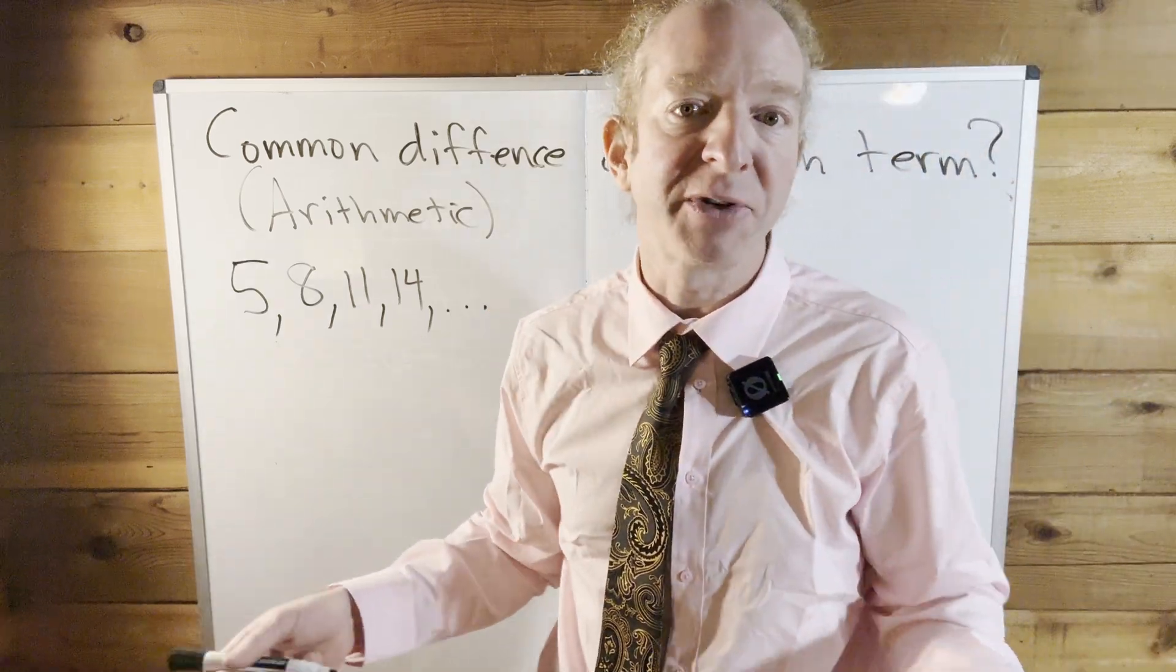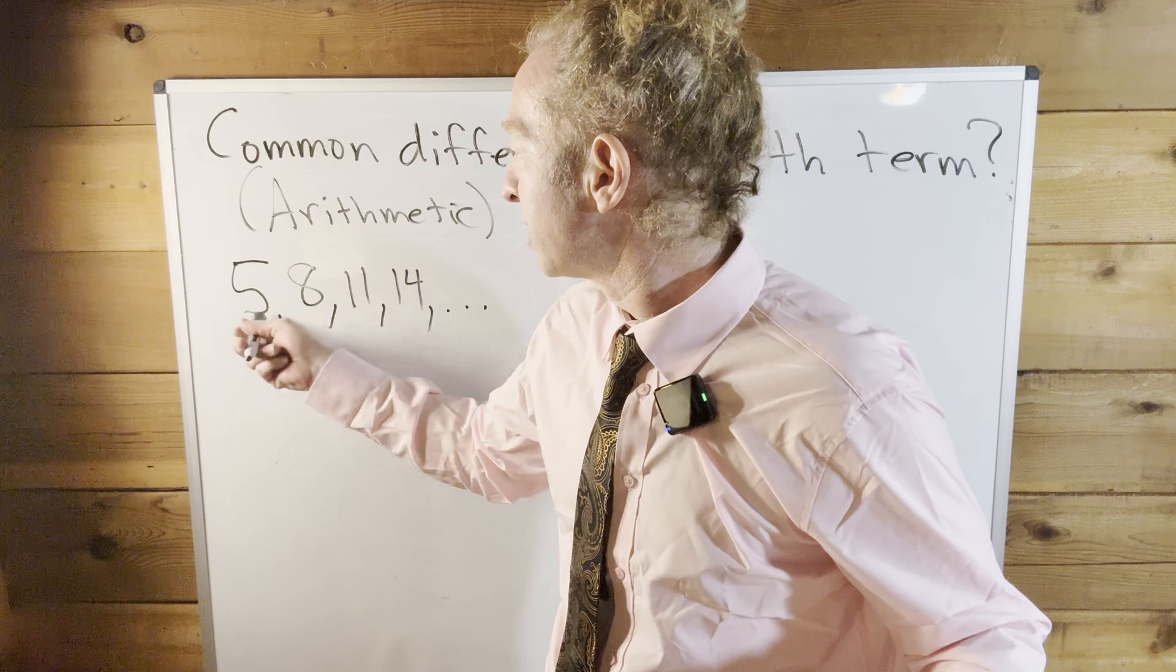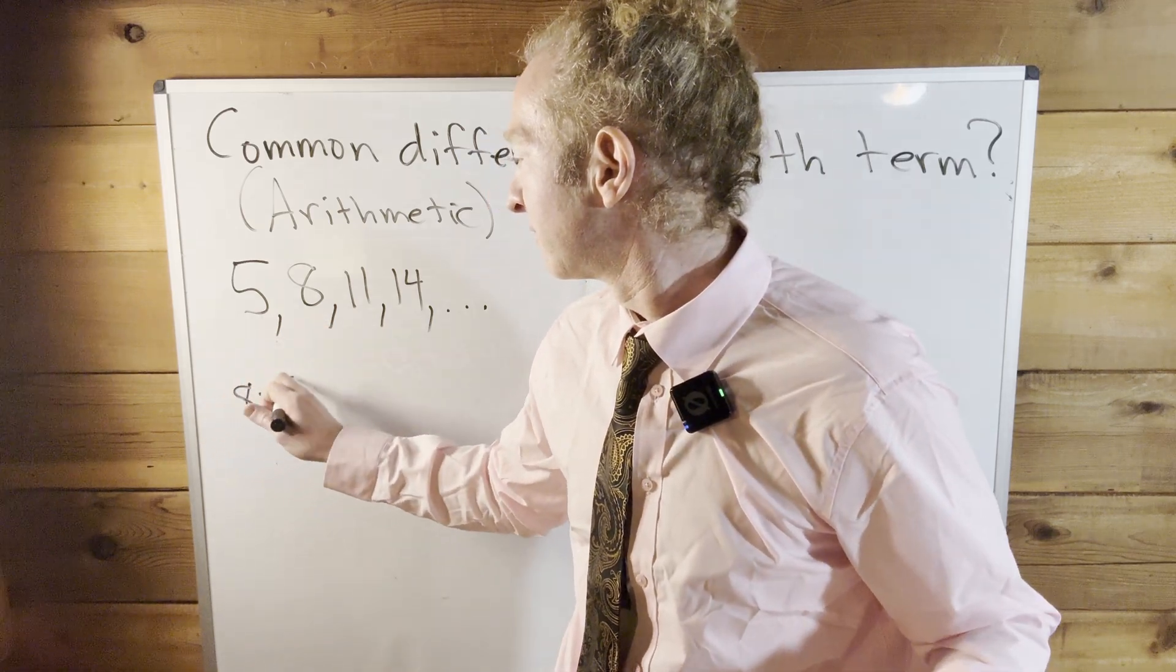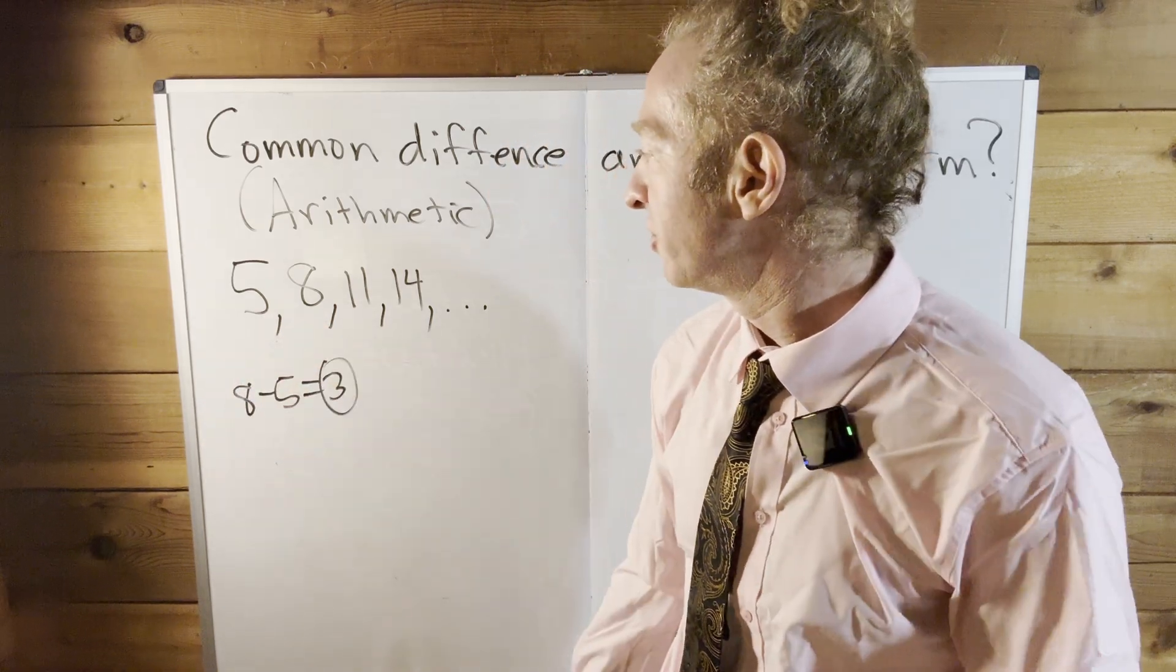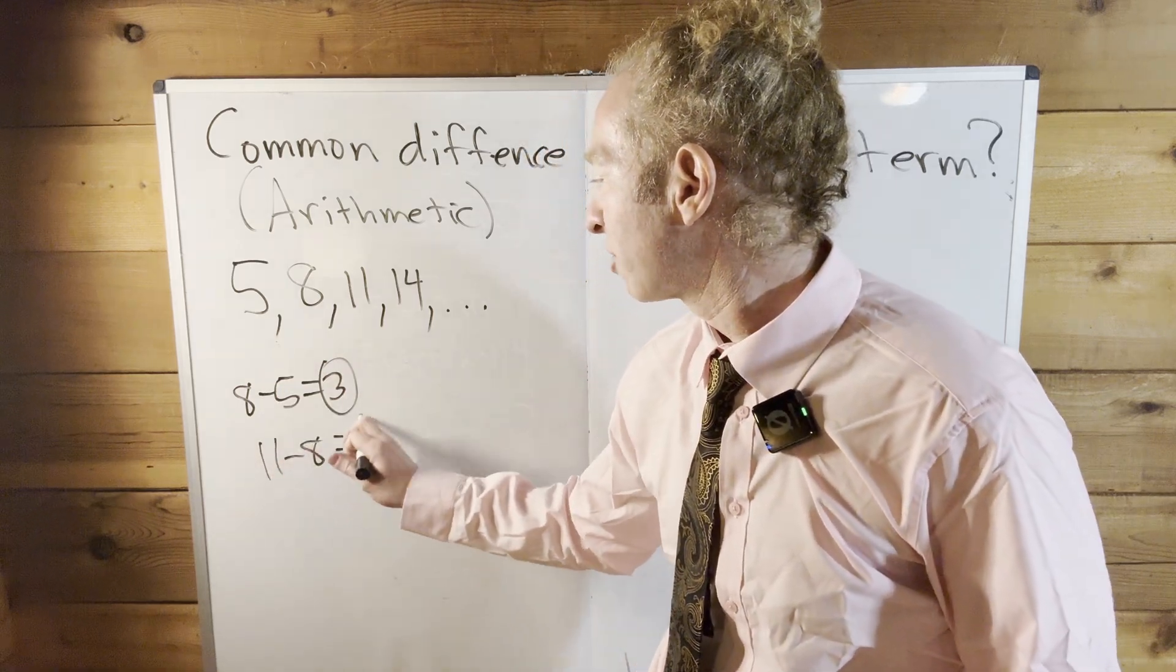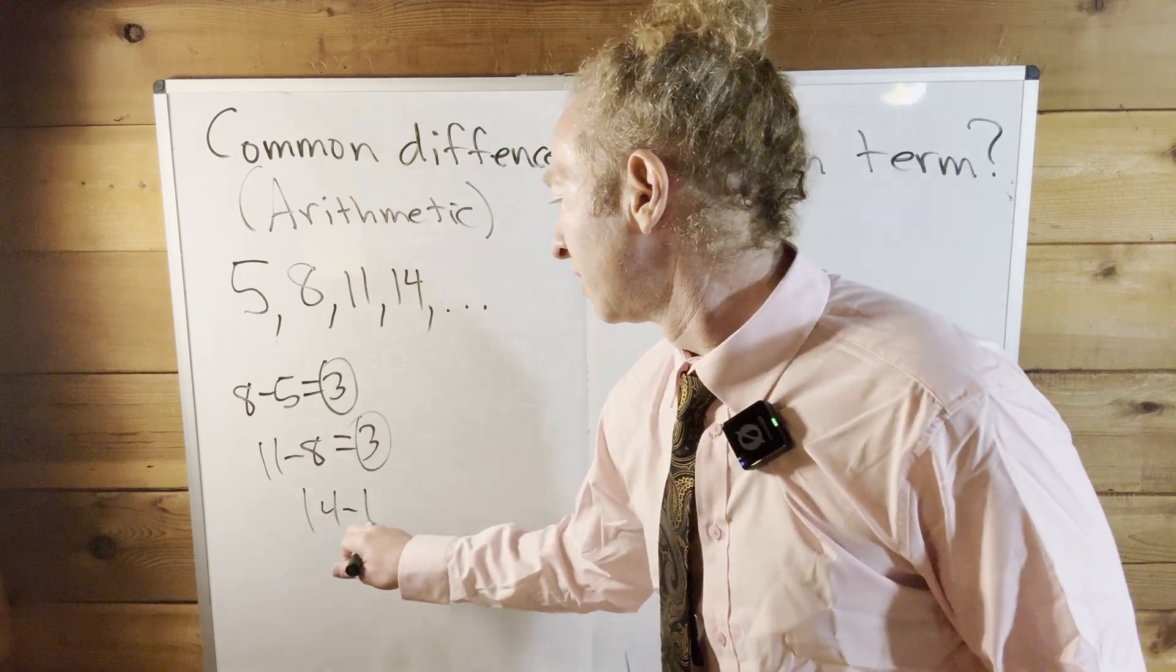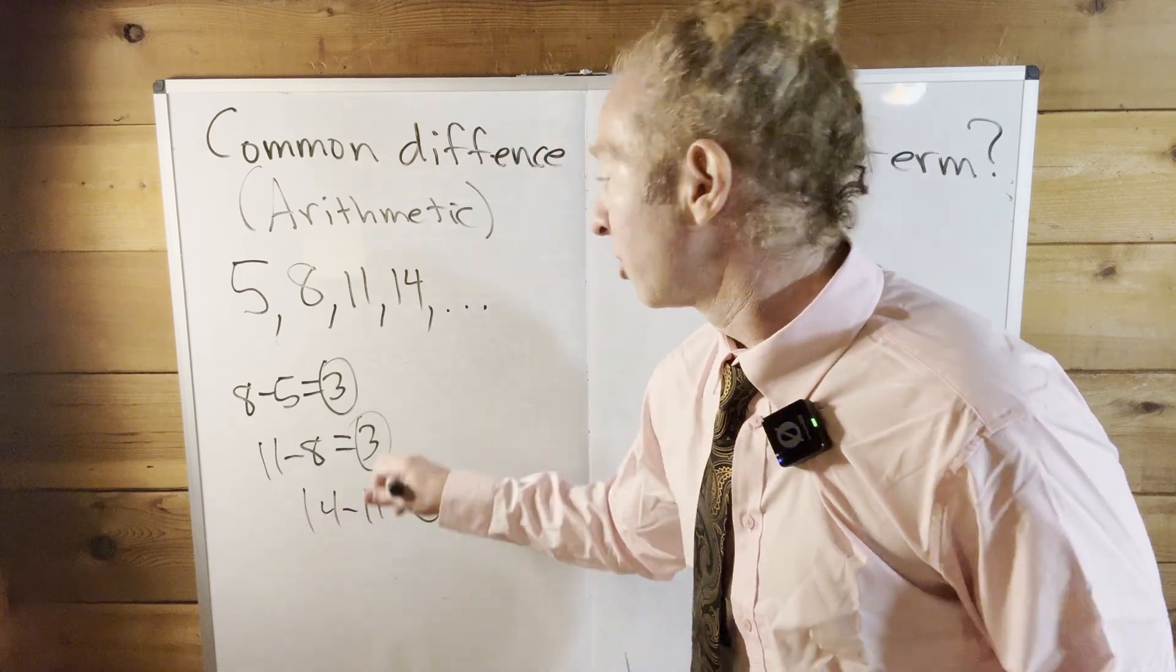So 3 is the common difference. But you can find it via a formula. You can just do 8 minus 5 and that's equal to 3. That's our common difference. Or you can do 11 minus 8 and that's equal to 3. That's our common difference. Or you can do 14 minus 11 and that's our common difference. So what's the answer?